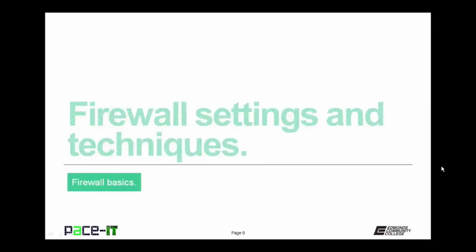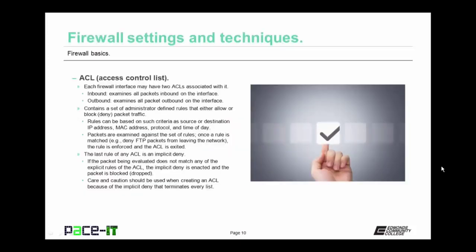It's time to proceed with firewall settings and techniques. Each firewall interface may have two ACLs: an inbound ACL and an outbound ACL. The inbound ACL examines all packets inbound on that interface; the outbound ACL examines all packets outbound. The ACL contains administrator-defined rules that either allow or deny packet traffic. Rules can be based on criteria such as source or destination IP address, MAC address, protocol, and time of day. When an ACL examines packets, those packets are examined against the rules from top to bottom. Once a rule is matched — such as denying FTP packets from leaving the network — the rule is enforced.